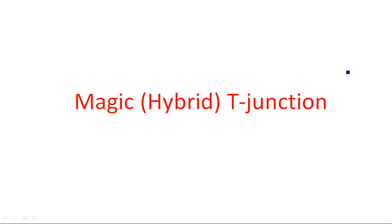In this video, I am going to explain about Magic T. Magic T is also known as Hybrid T-junction. Hybrid T-junction is different; Hybrid Ring is different. Don't confuse — Magic T is also known as Hybrid T-junction. If it has a name called ring, that is different — Rat Race Junction or Hybrid Ring. Magic T is nothing but a combination of both E-field and H-field.